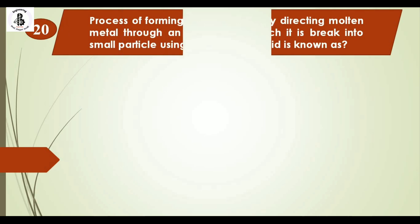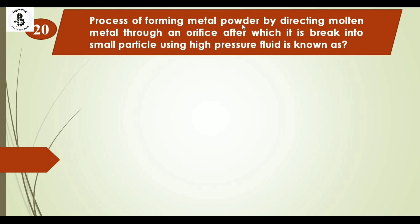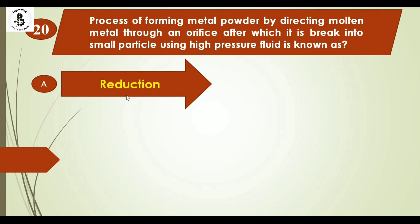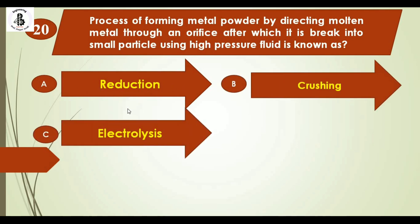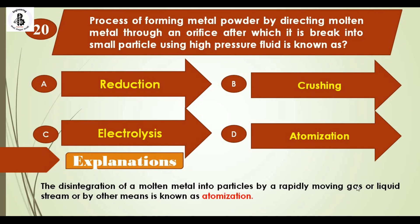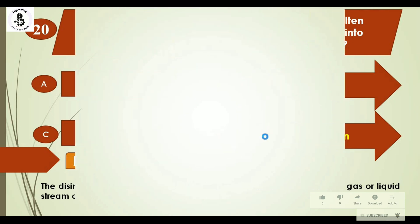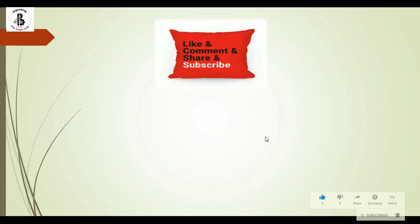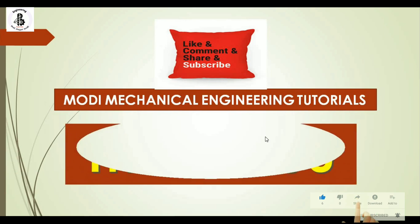Question 20: The process of forming metal powder by directing molten metal through an orifice, after which it is broken into small particles using high-pressure fluid, is known as — Option A: reduction, Option B: crushing, Option C: electrolysis, Option D: atomization. The disintegration of molten metal into particles by rapidly moving gas or liquid streams is called atomization. The right answer is option D. I hope you understood this — please subscribe and share Modi Mechanical Engineering Tutorials. Thank you!